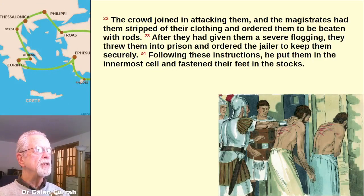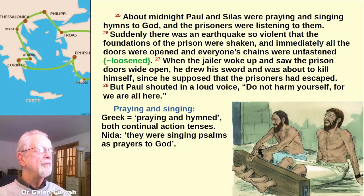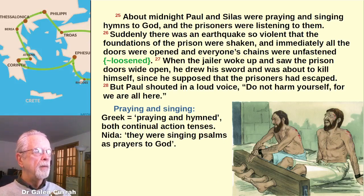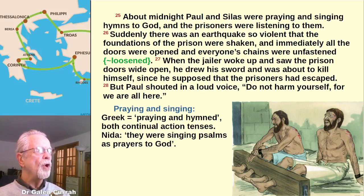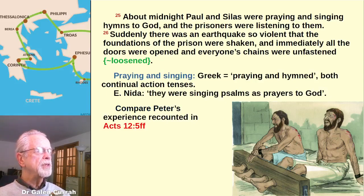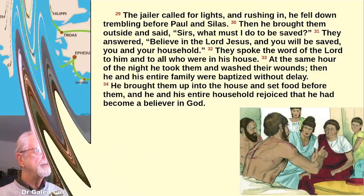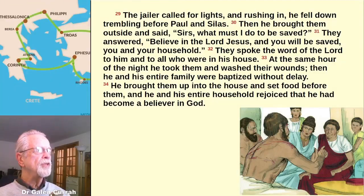Read aloud verses 22 through 24, then verses 25 through 28. The phrase 'praying and singing' is an unusual construction in Greek — literally, 'praying and hymned.' Both, however, have a continual action tense. Eugene Knight suggests we translate this phrase as 'they were singing psalms as prayers to God.' You might want to compare Peter's experience, which is recounted in Acts chapter 12, when he was delivered by angels from a prison. Have someone read aloud verses 29 through 34.